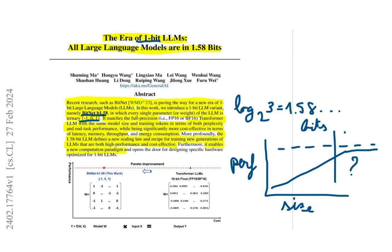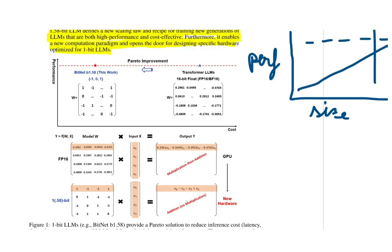More interesting, it enables a new computation paradigm and opens the door for designing specific hardware optimized for one bit LLMs. Here they have a figure that further explains what they are trying to do. On the left side we have BitNet b1.58 and you can see in its weights only the values 1, minus 1, and 0 are allowed, when in comparison for the 16 bit floating point LLMs we have floating point values like the ones depicted here.